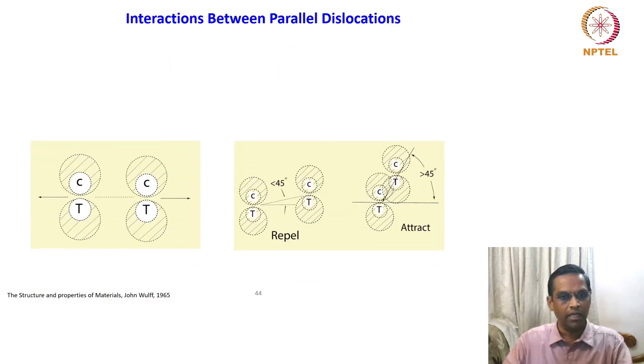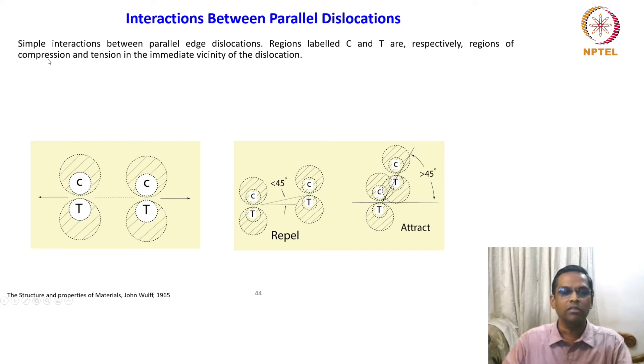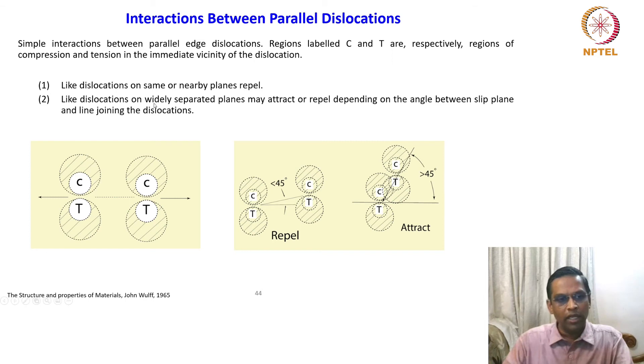Now we will look at some specific and interesting examples. What you are seeing here are two simple interactions between parallel edge dislocations. Regions labeled C and T are respectively regions of compression and tension in this schematic. These are the same edge dislocations trying to repel each other, but the repulsion is not always going to happen. Like dislocations on the same or nearby planes repel. Here we consider that these two edge dislocations lie in the same plane or nearby. There are two things - they try to repel, but that is not always the case. Like dislocations on widely spaced planes may attract or repel. This is important, we have to remember this very important point, and it will lead to a very logical conclusion.